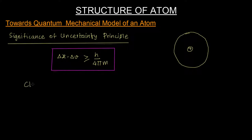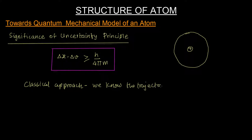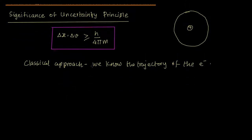So the classical physics approach says that we know the trajectory of the electron. When can you say with some definiteness that the trajectory is like that?